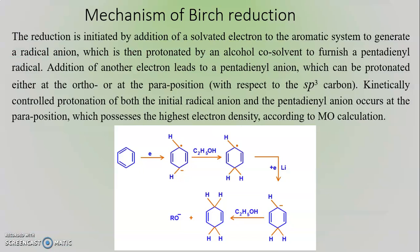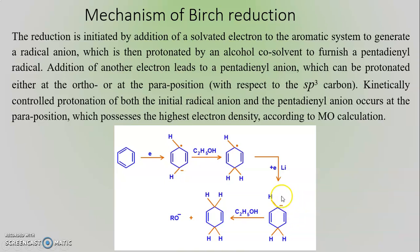Mechanism of Birch Reduction: The reduction is initiated by the addition of a solvated electron to the aromatic system to generate a radical anion. This anion abstracts a proton from the alcohol to form a pentadienyl radical. This pentadienyl radical is further reduced by the addition of an electron from the metal to form a pentadienyl anion species. This negatively charged carbon then abstracts a proton from the alcohol molecule and forms 1,4-cyclohexadiene.